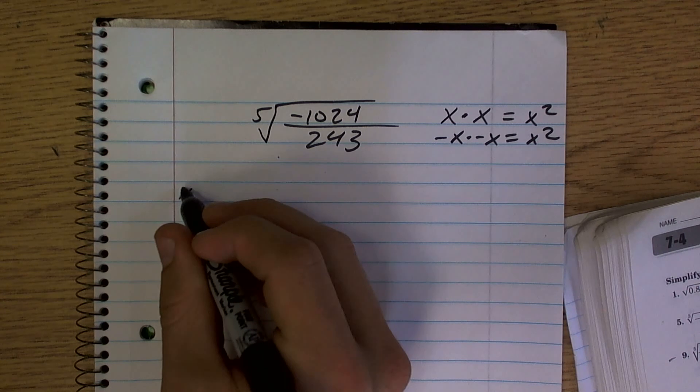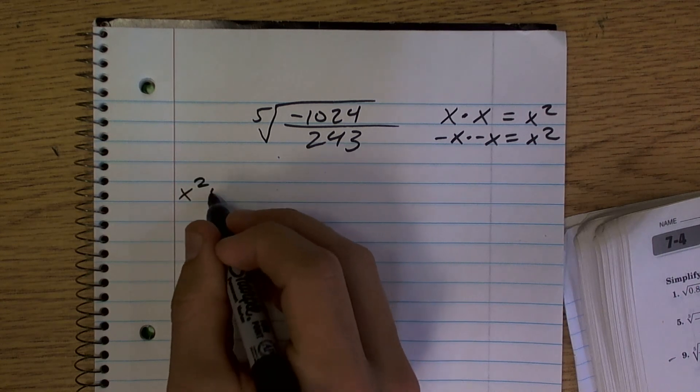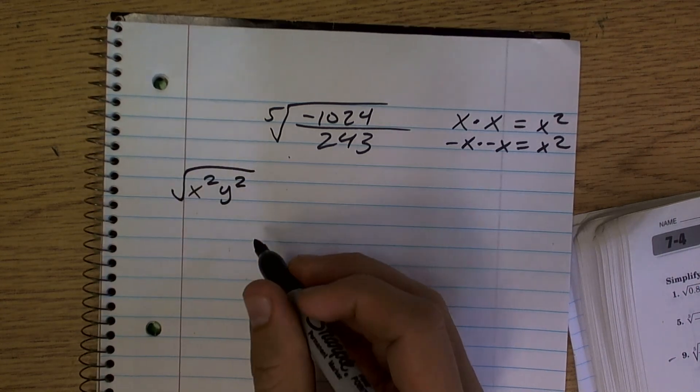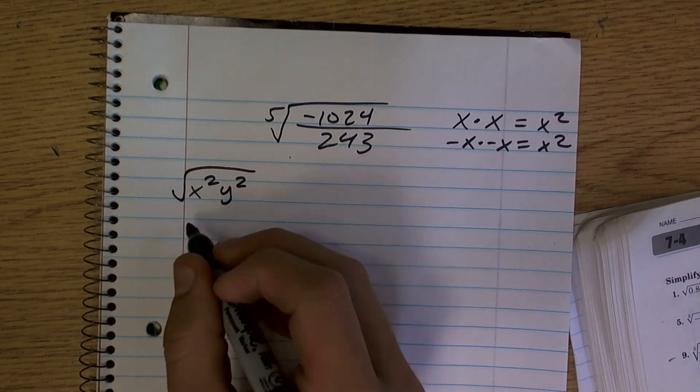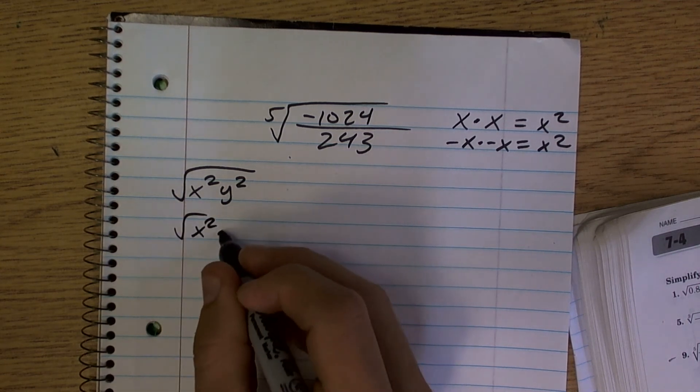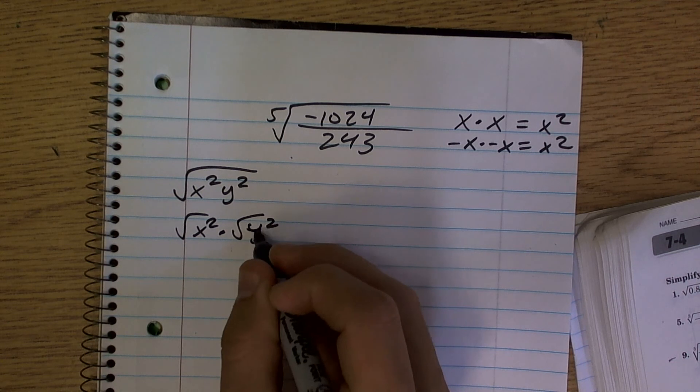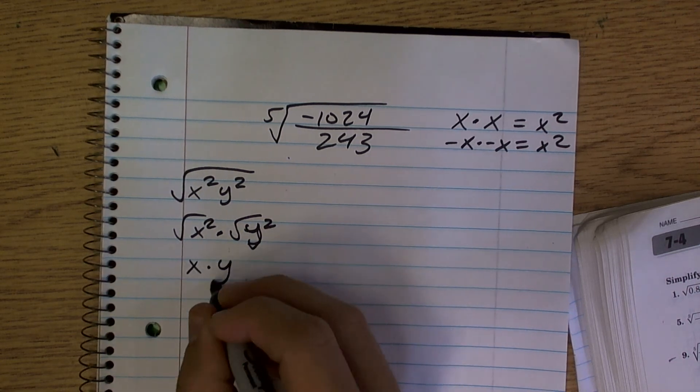If I had the square root of x squared times y squared, since there's multiplication going on, you can break that up into the square root of x squared times the square root of y squared. So it equals x times y.